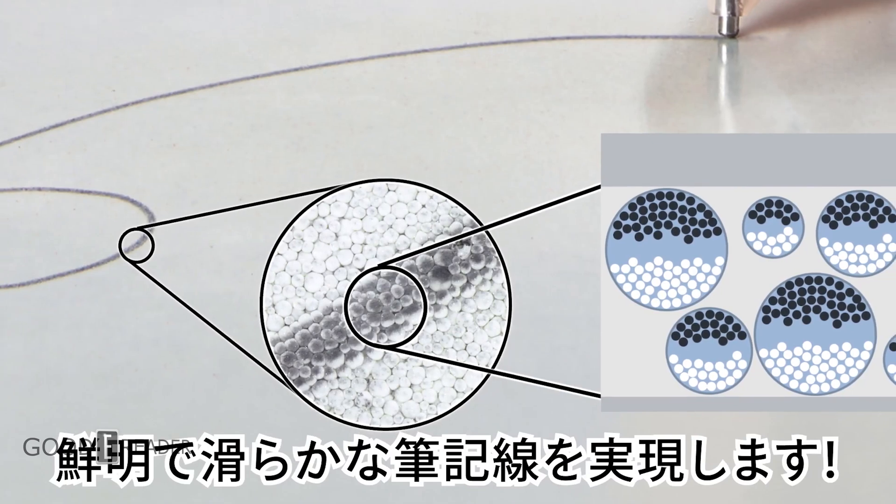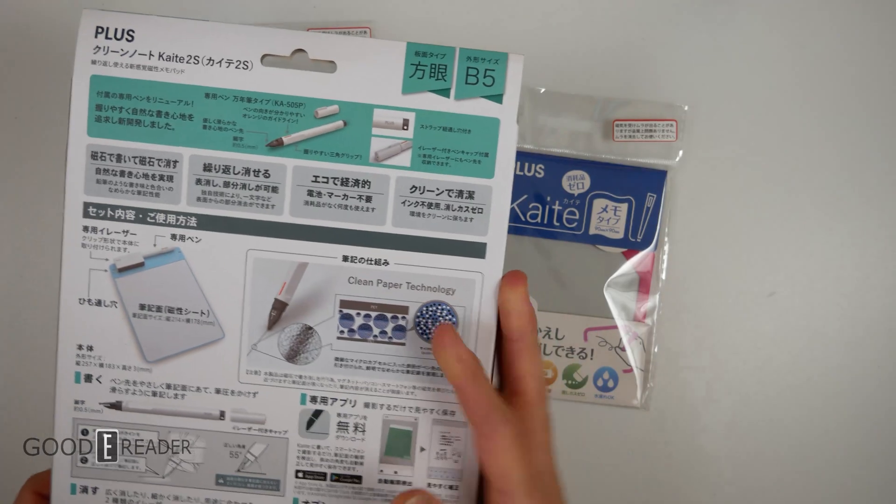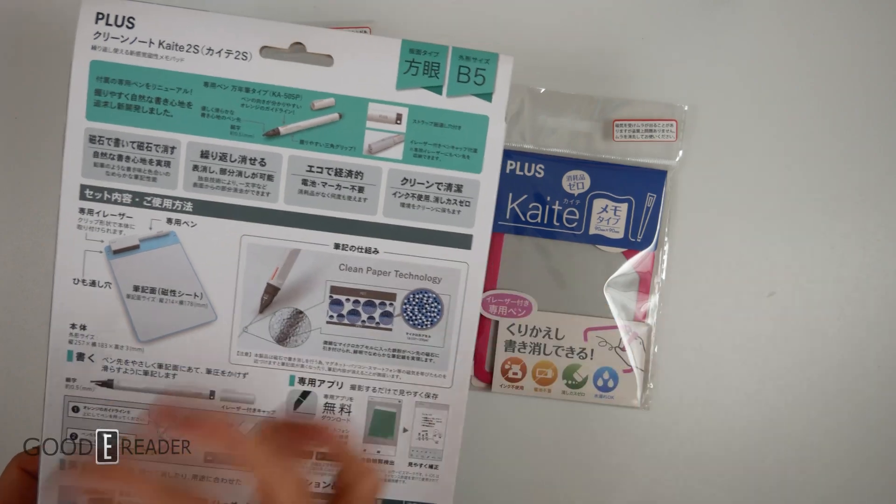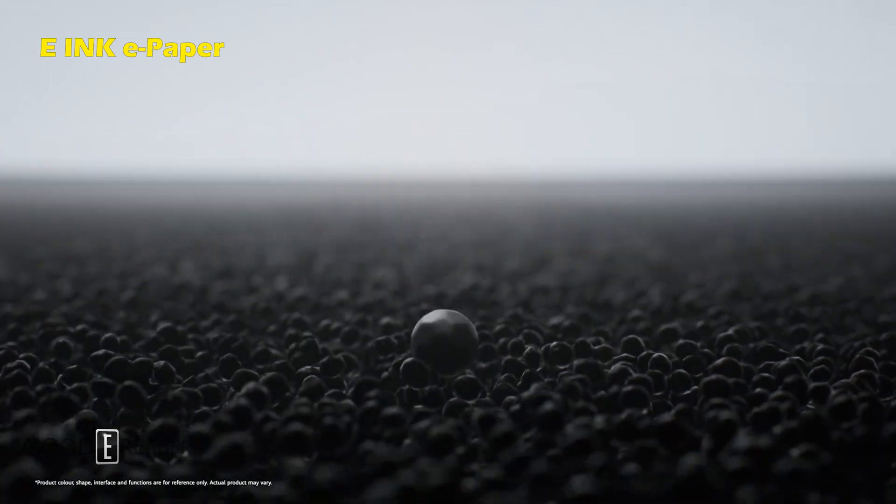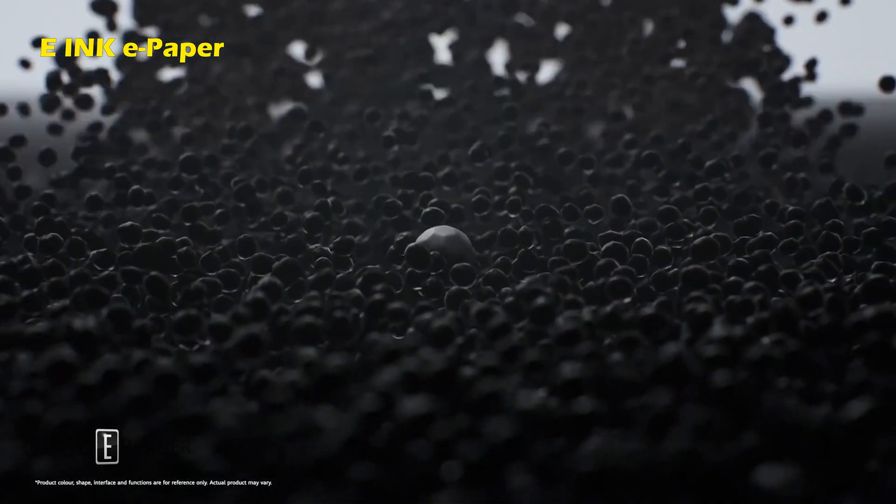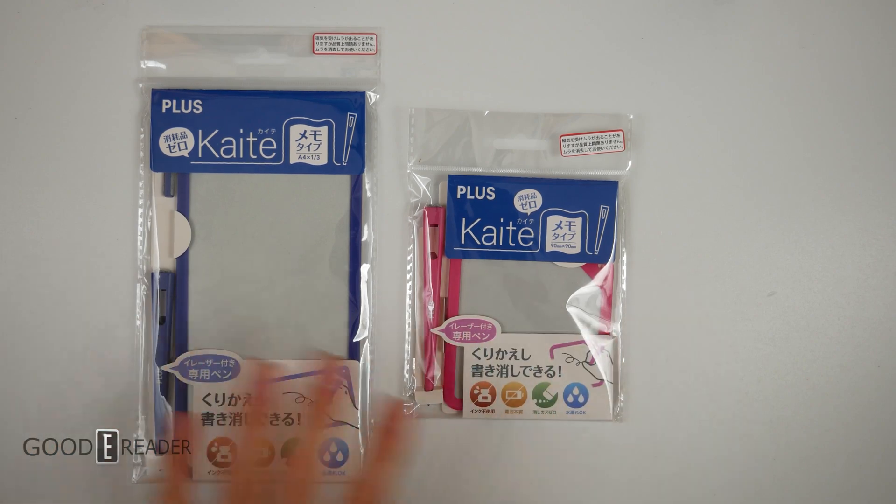Exactly the same way electronic ink, aka e-ink works, except this uses a magnet via your hand to power it, whereas an e-reader or an e-ink device is electronically controlled. They're the same concept and today they've sent us two new products.